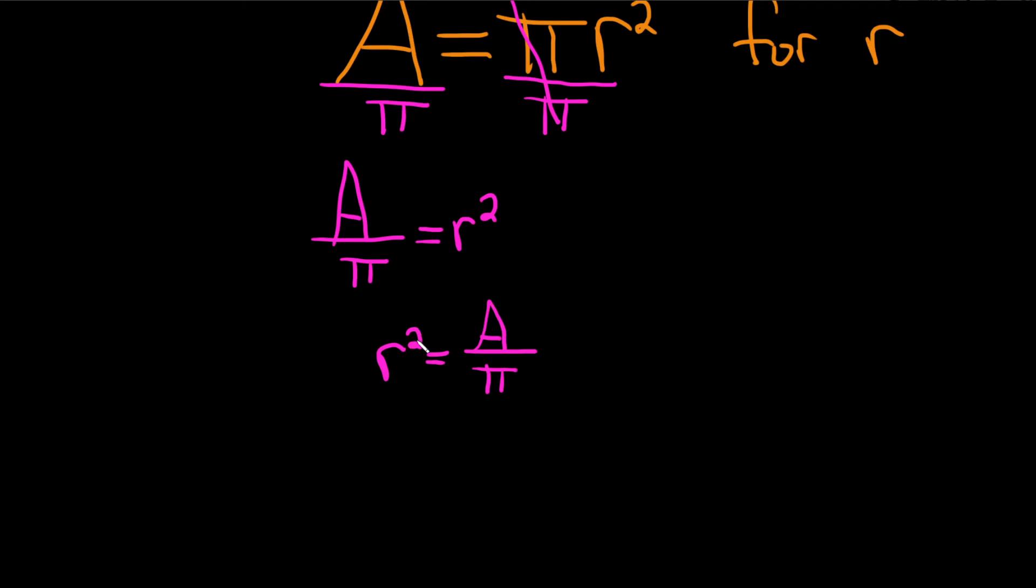Now, to get rid of the two, we can take the square root on both sides. Whenever you take the square root and you have a variable squared, you get a plus or minus. So here we get r equals plus or minus the square root of A over pi.